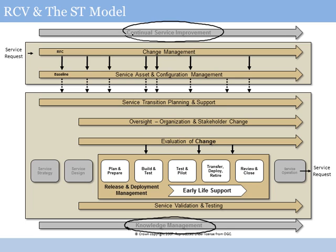Continual service improvement activities are going to be ongoing throughout the lifecycle, providing CSI not just in ways that may generate changes for us to manage but also improvements to all our various processes. Service strategy is going to be looking at change proposals and whether or not those should be approved based on large-scale risks, costs, and value. The change management process really begins at the very beginning of strategy. My service asset and configuration management information is used throughout the lifecycle to provide an accurate information basis for decisions about existing capabilities.